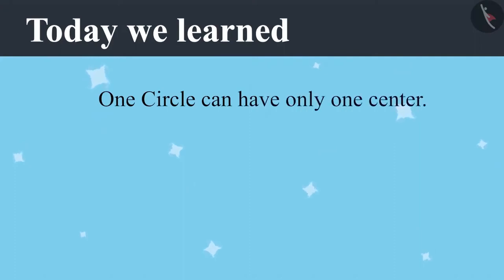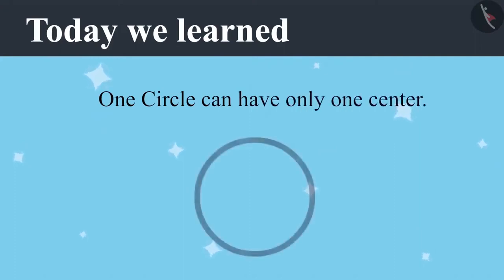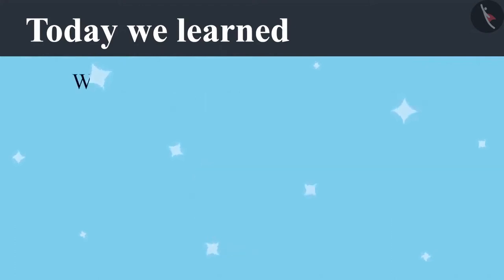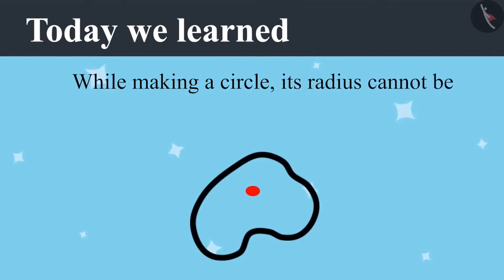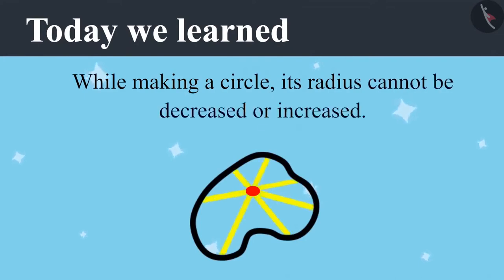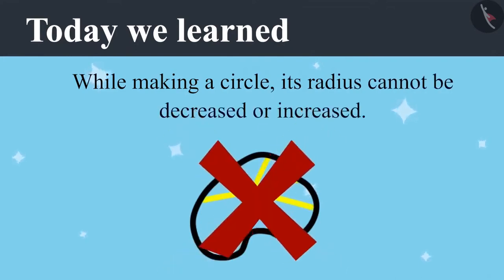Vandana told Ayushman that a circle can have only one centre, and told Riyansh that while making a circle its radius cannot be decreased or increased. If you pay attention in class, you will not have to repeat your work.